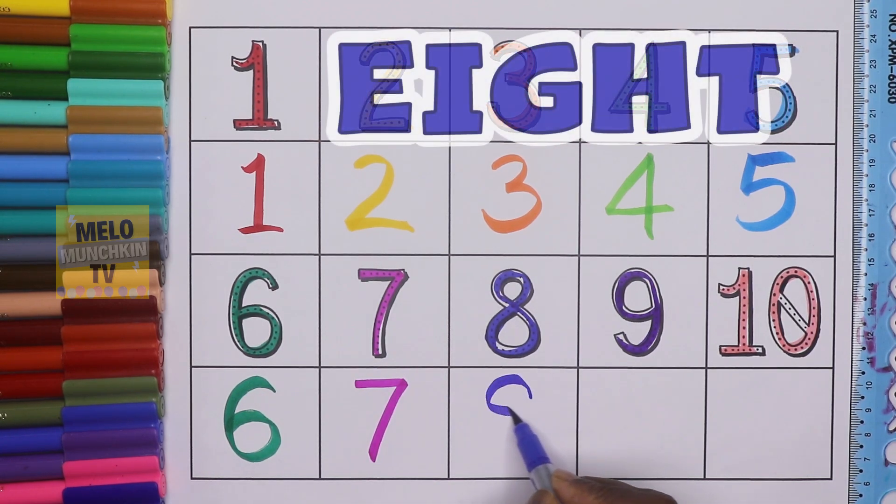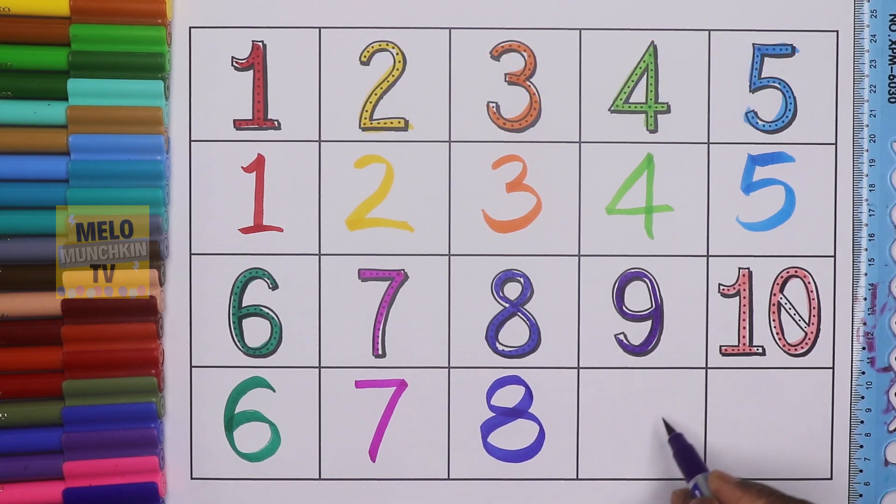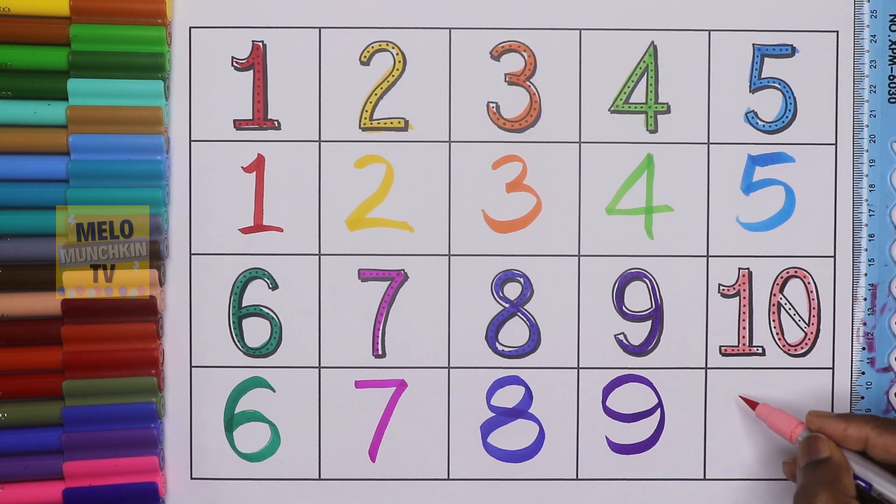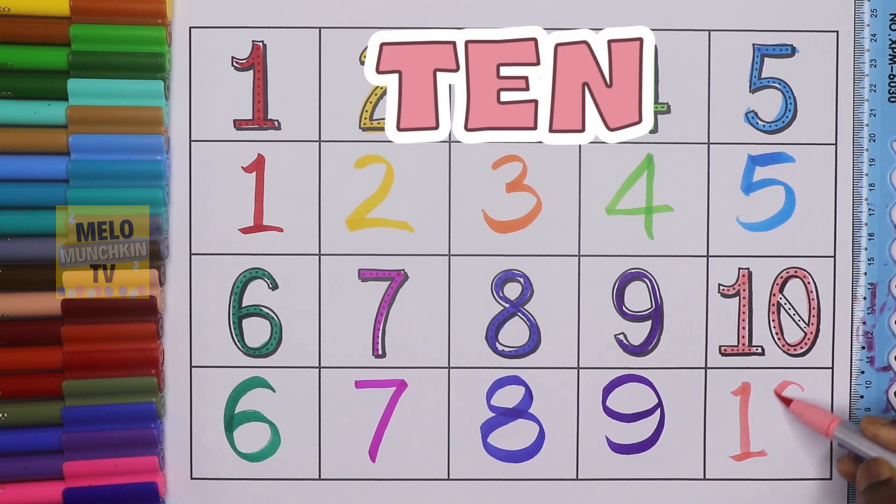This is number eight: E-I-G-H-T, eight. This is number nine: N-I-N-E, nine. And this is number ten: T-E-N, ten.